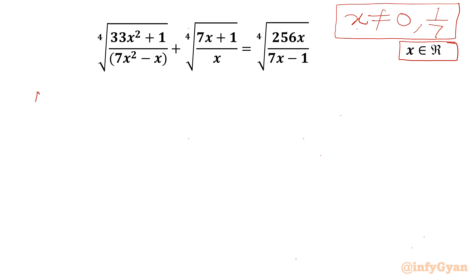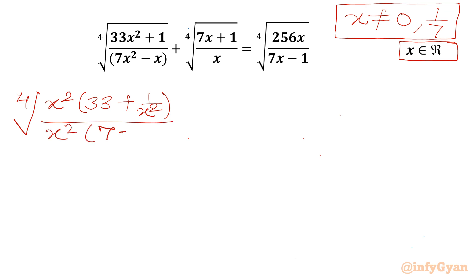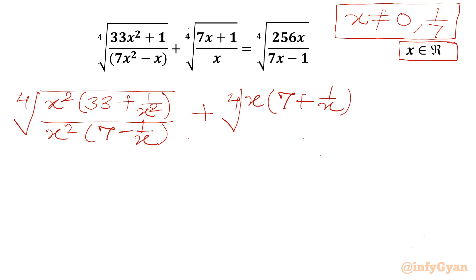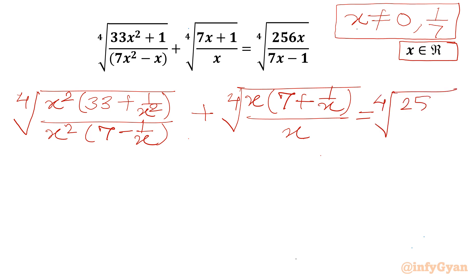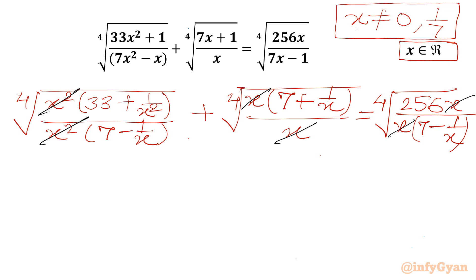Now I will write our equation by taking x squared common from the numerator, giving us 33 plus 1 over x squared, and x squared common from the denominator giving 7 minus 1 over x. Plus the 4th root with x common: 7 plus 1 over x, over x. The right-hand side is the 4th root of 256x over (7 minus 1 over x). Now we can cancel x squared and x from numerators and denominators, since x is non-zero.